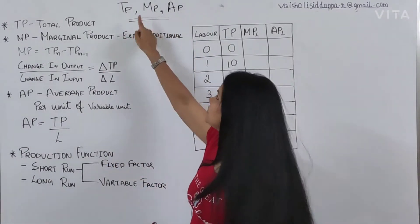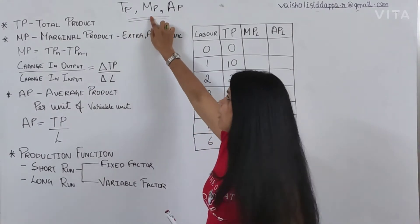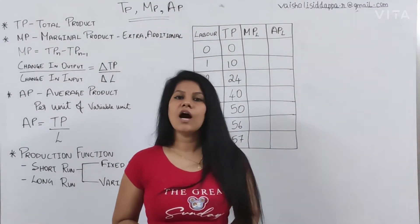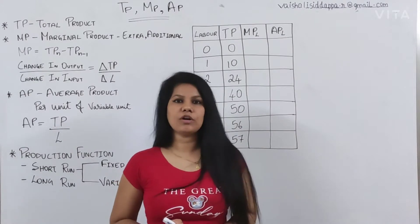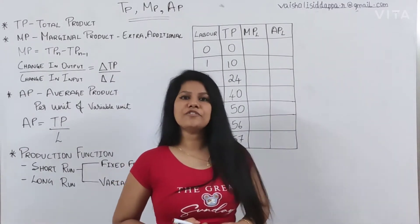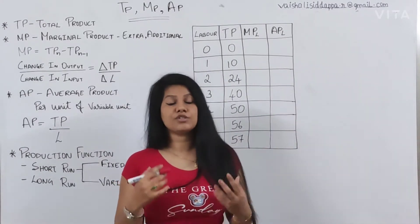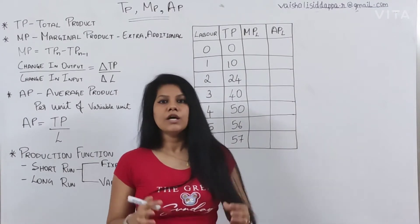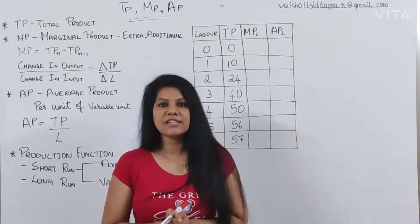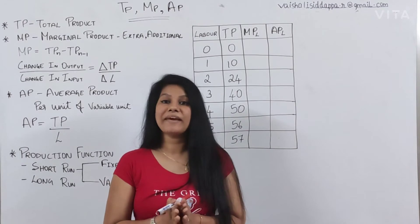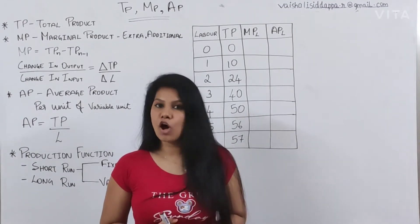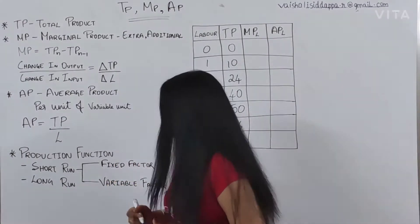TP is Total Product, MP is Marginal Product, and AP is Average Product. How exactly are these going to work in the short run? These concepts are all part of the short run production function. When we talk about production function, we can classify it on the basis of time in two ways: one is the long run, and the other is the short run.